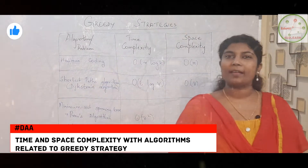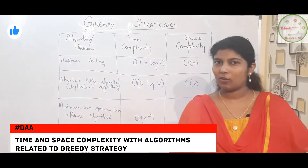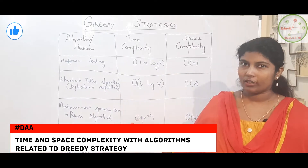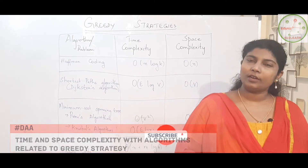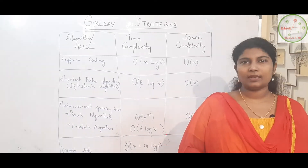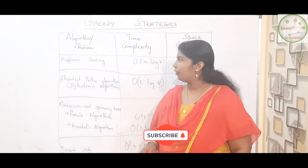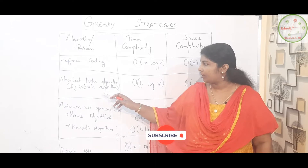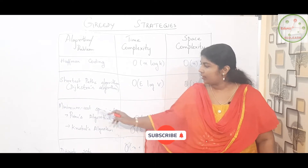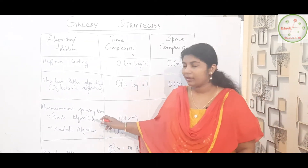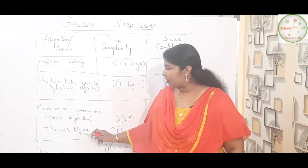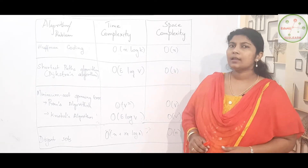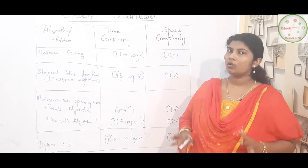Hello viewers, welcome back. Today we are going to focus on the time complexity and space complexity with algorithms related to greedy strategy. We are going to focus on Huffman coding, shortest path with Dijkstra's algorithm, then for minimum cost spanning tree we will be looking at Prim's algorithm and Kruskal's, and a little about the disjoint set.